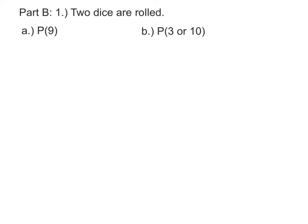Let's find the probability of getting a 9 when two dice are rolled. We have to think of all the ways to make a 9. A 9 can be made by a 3 and a 6, 4 and a 5, 5 and a 4, or 6 and a 3.